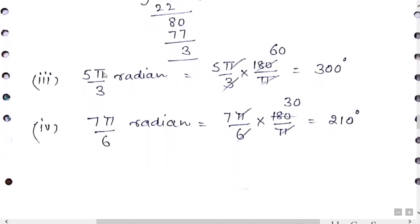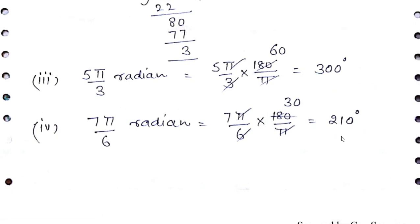For 5π, simply insert π = 180, so the answer is 5 × 60 = 300 degrees. For 7π/6, multiply by 180/π and cancel: 6 × 30 = 180, then 7 × 30 = 210 degrees. Please keep in mind: when converting radian to degree, multiply by 180/π; when converting degree to radian, multiply by π/180.